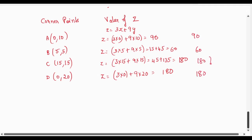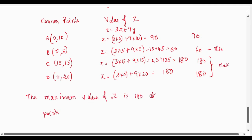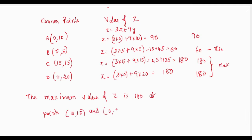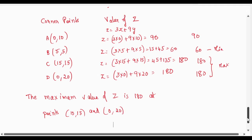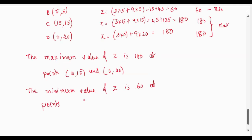There are two maximum values and one minimum value. The maximum value of Z is 180, occurring at both points (15, 15) and (0, 20). The minimum value of Z is 60 at point (5, 5).